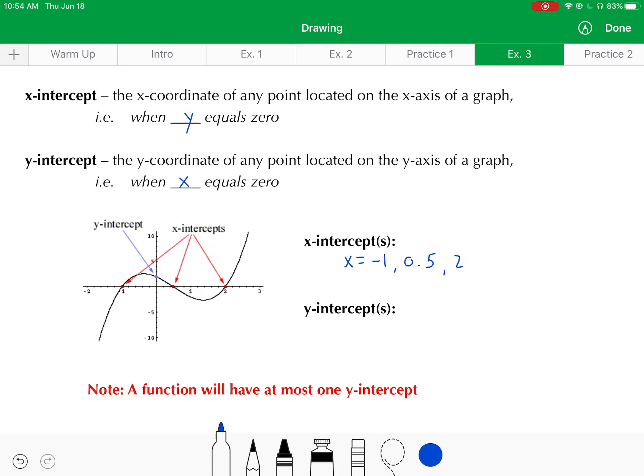and two. And then notice there's only one y-intercept, which would be at y equals, by the label there, y equals two.